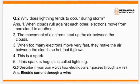Question number 2: Why does lightning tend to occur during a storm? Answer: 1. When clouds rub against each other, electrons move from one cloud to another. 2. The movement of electrons heats up the air between the clouds. 3. When too many electrons move very fast, they make the air between the clouds so hot that it glows. 4. This is a spark. 5. If this spark is huge, it is called lightning.